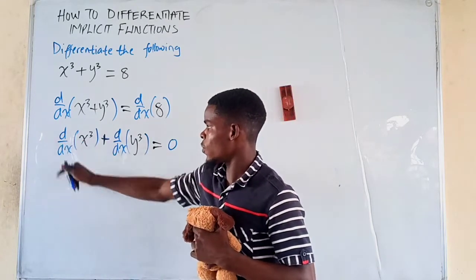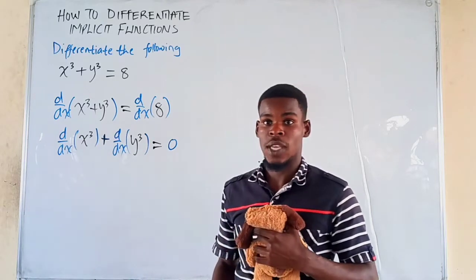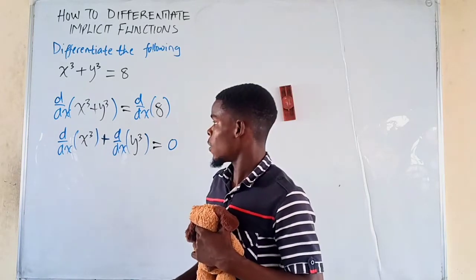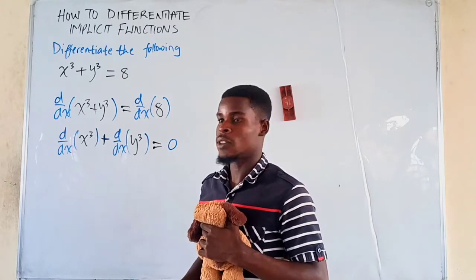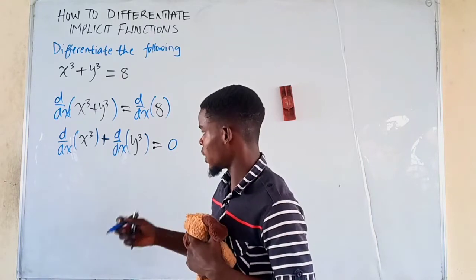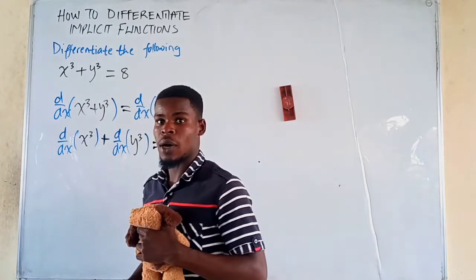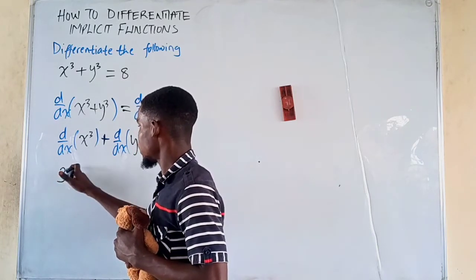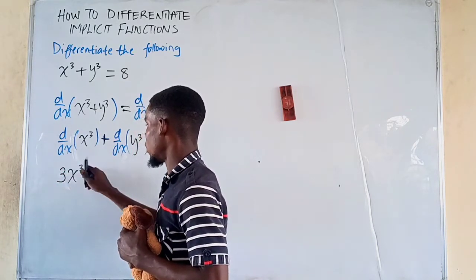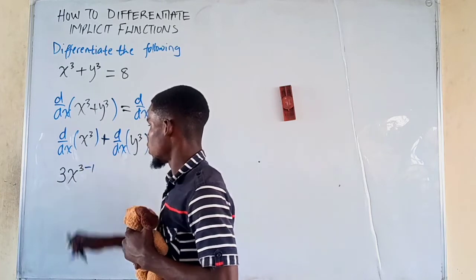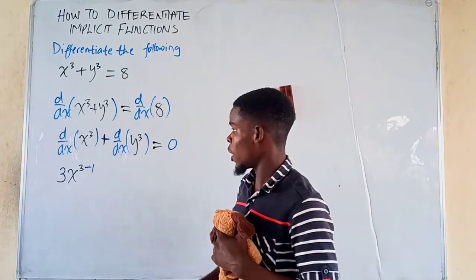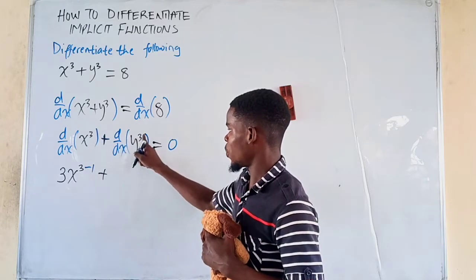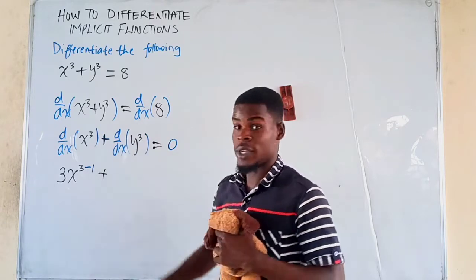We now have the derivative with respect to x of x raised to the power of 3. This is just a power function, so we differentiate it by bringing down the power and then subtracting 1 from it. We bring down the 3, multiply with x, and then subtract 1 from 3 — that is just by applying the power rule. Then we add it with the derivative of y to the power of 3 with respect to x.